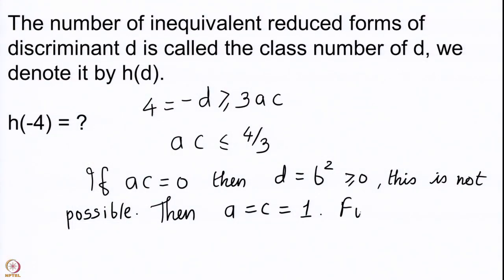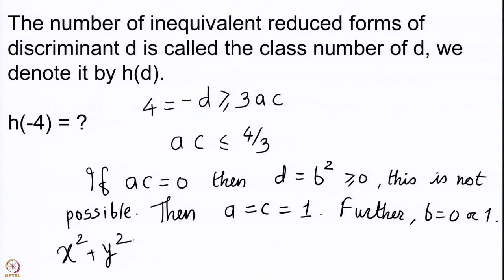So we have a = c = 1. Since a and c are both non-negative and their product equals 1, they must both equal 1. Now a is 1, and since a = c, b is allowed to go from 0 to a, so the possibilities for b are 0 and 1. The two forms we get are x² + y² (where a=1, b=0, c=1) and x² + xy + y².